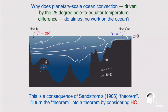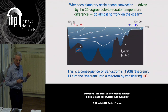Let's talk about planetary scale convection. I'm going to formulate an idealized model to address why planetary scale ocean convection — driven by the 25-degree pole-to-equator temperature difference — does almost no work on the ocean, providing almost no mechanical energy. This is a consequence of Sandstrom's theorem — I put quotes around 'theorem' because it was a set of loose thermodynamic arguments from 1906. But it's recently been turned into a rigorous theorem.